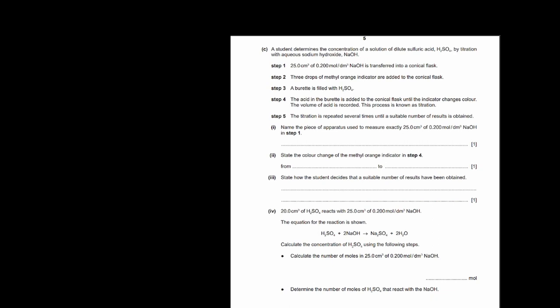A student determines the concentration of dilute sulfuric acid by titration with aqueous sodium hydroxide (NaOH). In step 1, 25 cm³ of 0.2 mol/dm³ NaOH is transferred to a conical flask with 3 drops of methyl orange. The burette is filled with H2SO4. Name the piece of apparatus used to measure exactly 25 cm³. Whenever you need to measure exactly 25 cm³ of a liquid, you always use a pipette — not a measuring cylinder or burette, as the pipette is the most accurate.